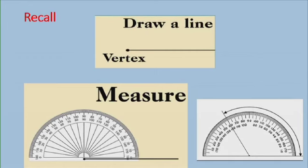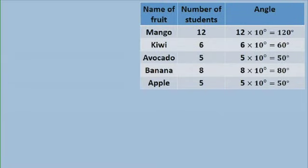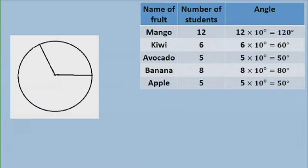To draw an angle, first I need to draw a line. I have my vertex. I use my protractor to measure the required angle, and then I draw a line. For example, if I need to measure an angle of 120 degrees, using my protractor I read 120 degrees and draw a line. So for the first sector, Mango, it is 120 degrees. I have my sector here measuring 120 degrees.